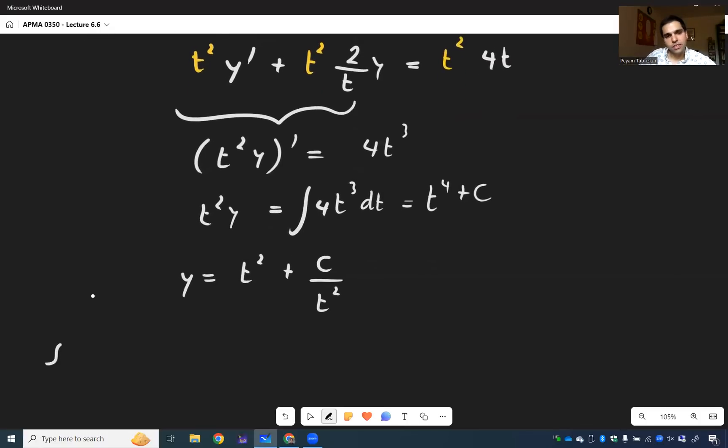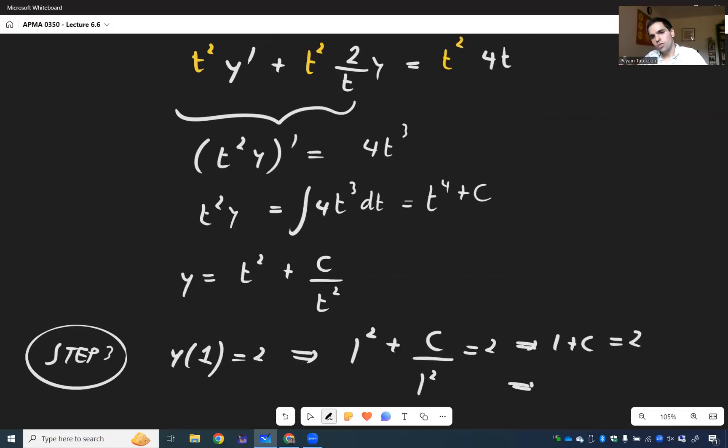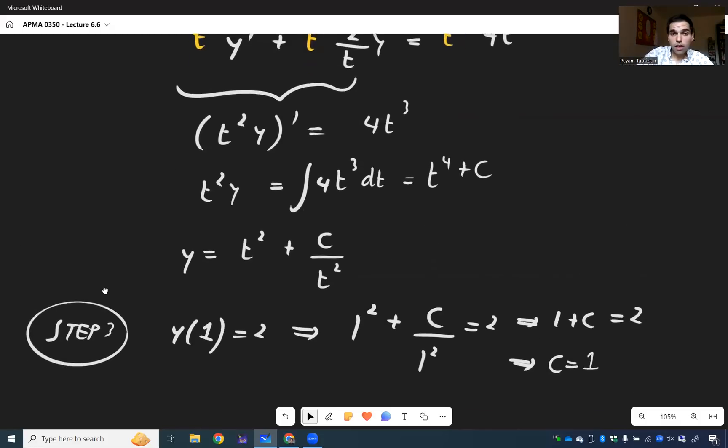We just need to solve for c. So, y of one equals two. So, one squared plus c over one squared equals two. So, one plus c is two. So, c is actually not bad, it's just one.